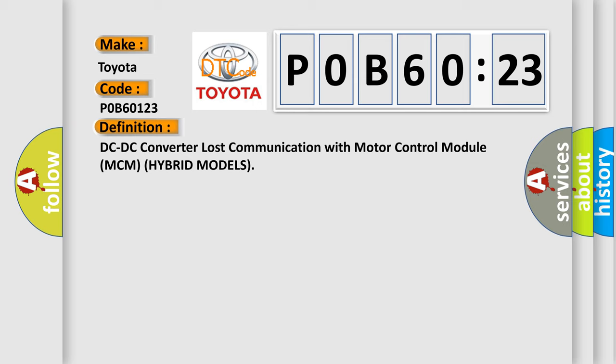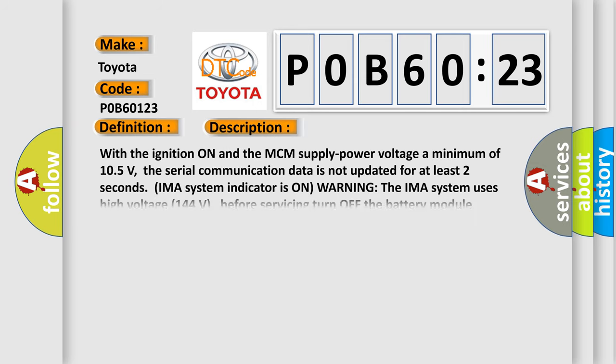And now this is a short description of this DTC code. With the ignition on and the MCM supply power voltage a minimum of 105 volts, the serial communication data is not updated for at least two seconds. The IMA system indicator is warning the IMA system uses high voltage 144 volts before servicing turn off the battery module switch.